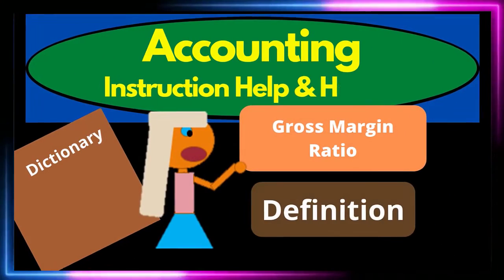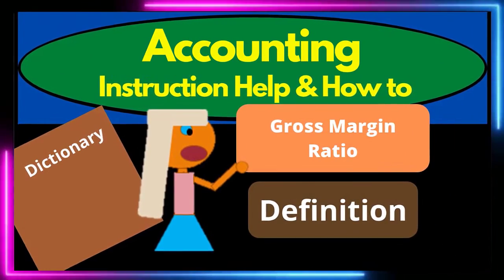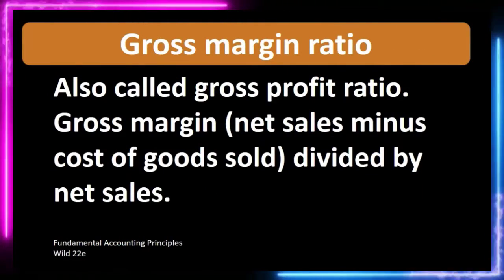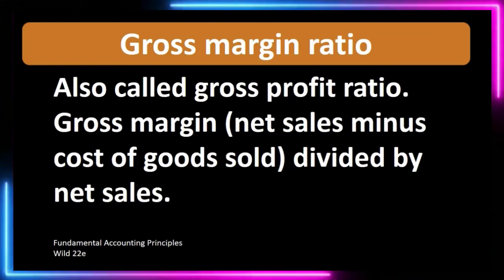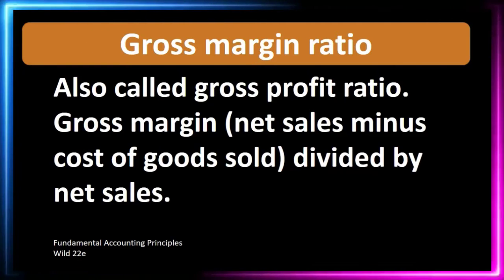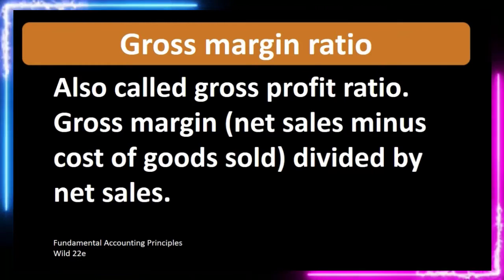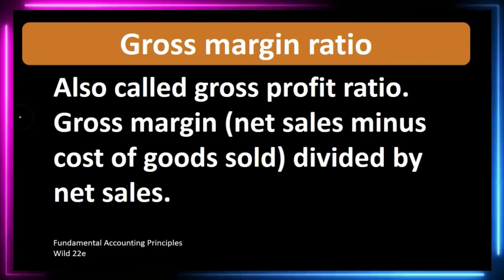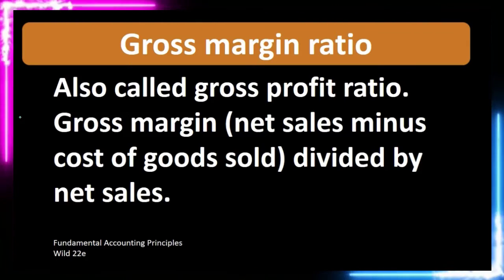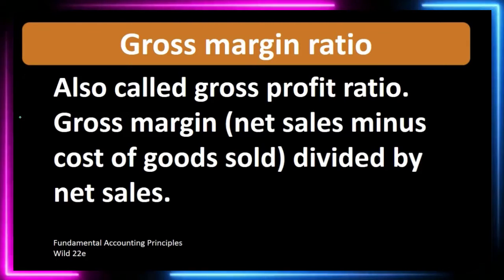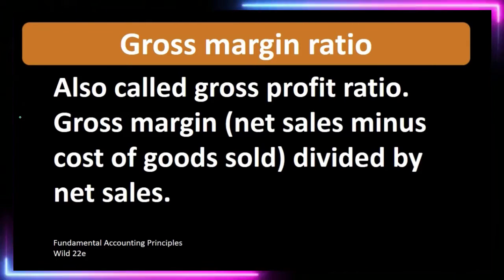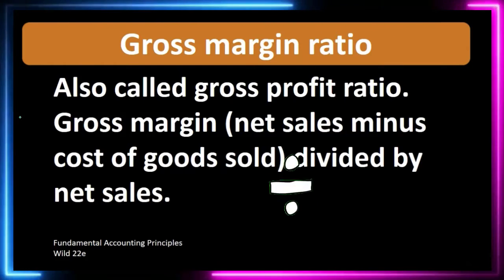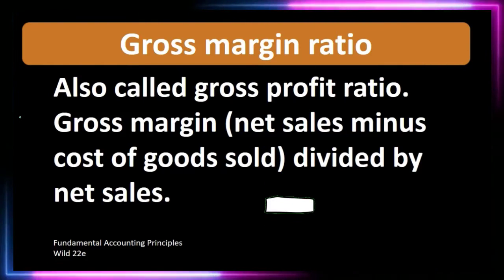Hello. In this lecture we're going to define gross margin ratio. According to Fundamental Accounting Principles, 22nd edition, the definition of gross margin ratio — also called gross profit ratio — is: gross margin equals net sales minus cost of goods sold, divided by net sales.